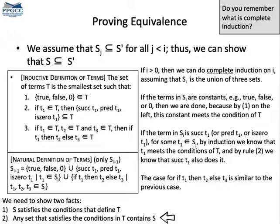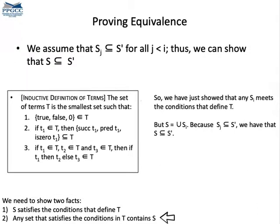Now, Si plus 1 can also contain, for instance, succ T1, where T1 is in Si. In this case, we know that T1 is in S prime by induction. But then succ T1 is in S prime as well, due to condition 2. And we can use the same reasoning for the other shapes of terms in Si plus 1. So, we have shown that any Si meets the conditions that define T, but S is the union of the sets, which all belong into S prime. Therefore, S must be a subset of S prime.